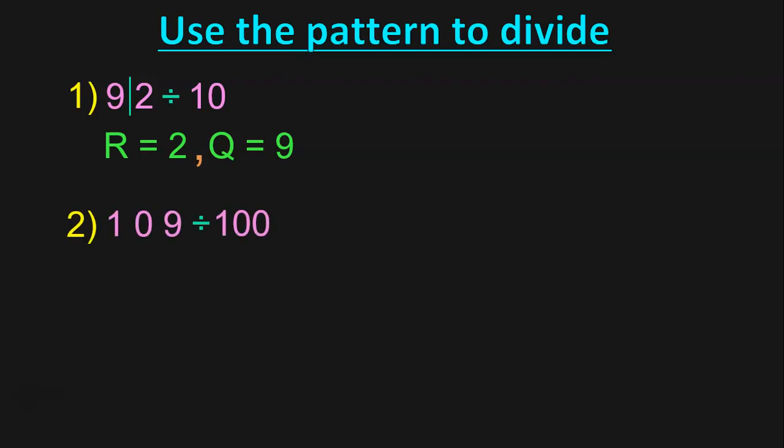We have a 3-digit number, 109 divided by 100. Where should I draw the line? Yes, after the 10's place. So, the remainder is 9 and the quotient is 1.